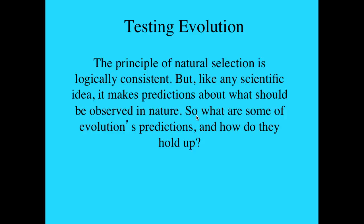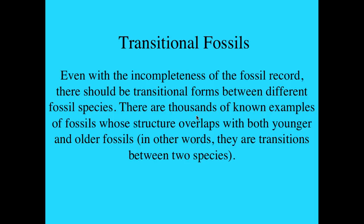So how do we test this? It's fine to say that these are all logically consistent, but just like any scientific idea, we should be able to make a series of observations that support the predictions we've made. One prediction is that despite an incomplete fossil record, there should be examples showing slow and gradual change. These are called transitional forms, and thus transitional fossils. There are tens of thousands of known examples of fossils whose structures overlap with both younger and older fossils — a transition from one form to the new form.